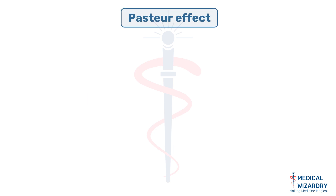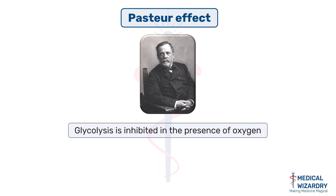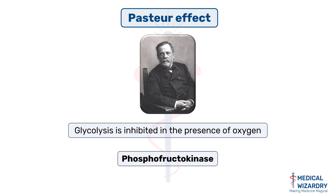Coming to the Pasteur effect — this effect is named after Louis Pasteur, who discovered it in 1857 in yeast. He observed that in the presence of O2, glycolysis is being inhibited. This inhibitory effect of O2 on glycolysis is termed the Pasteur effect, and it occurs due to the inhibition of the phosphofructokinase enzyme.